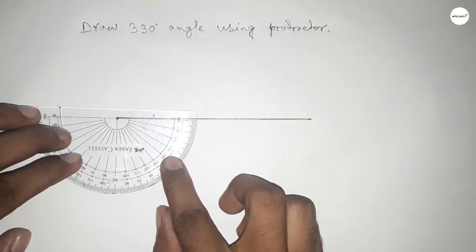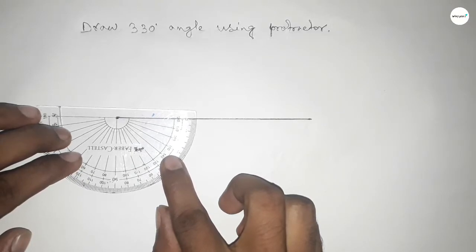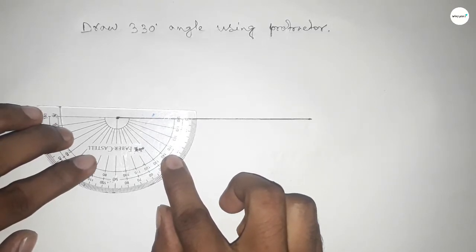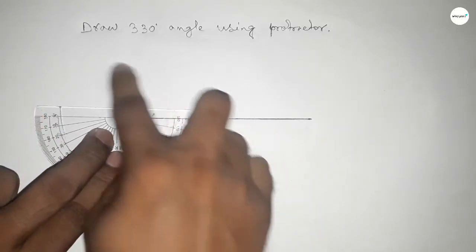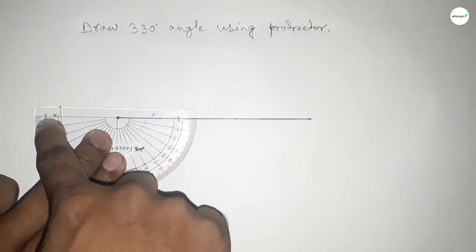Now putting the protractor on the line by this way, perfectly. Now counting the angle, so this is up to 180 degree angle.